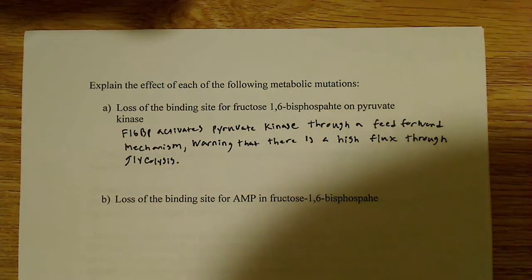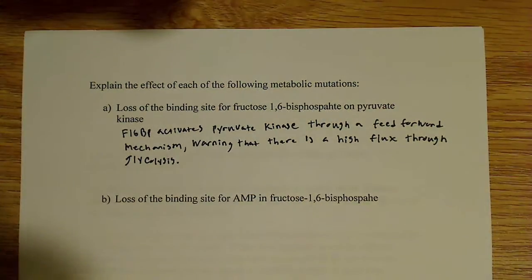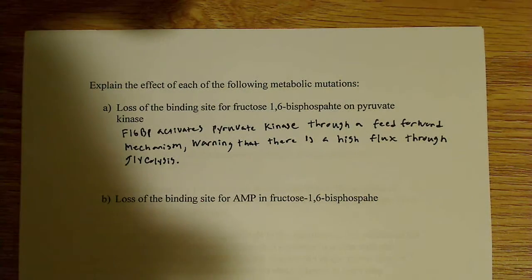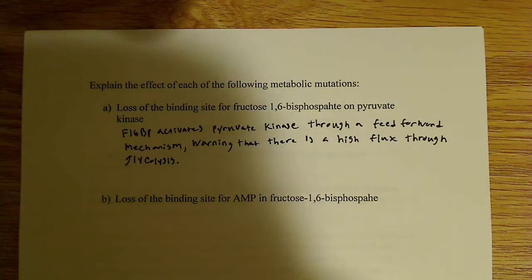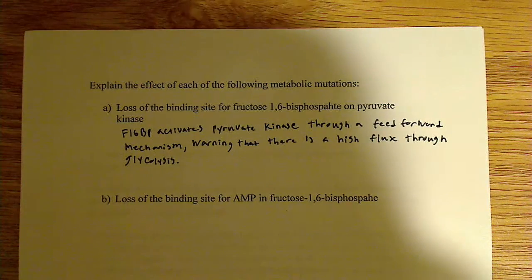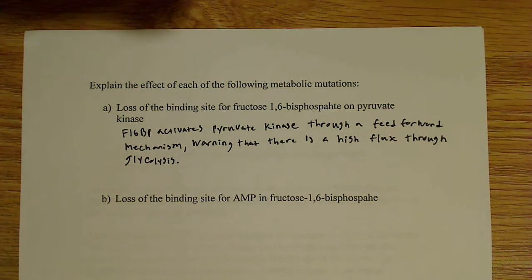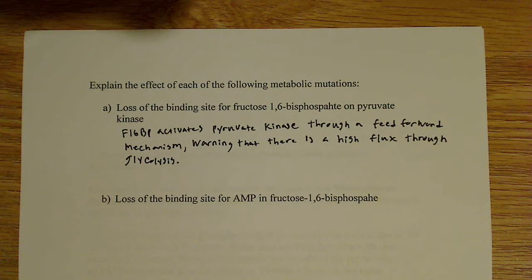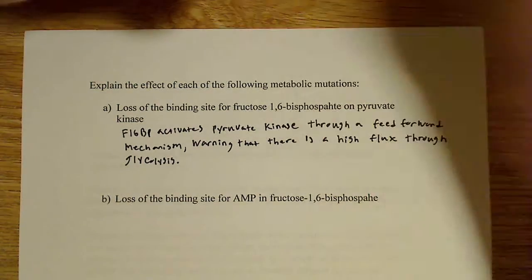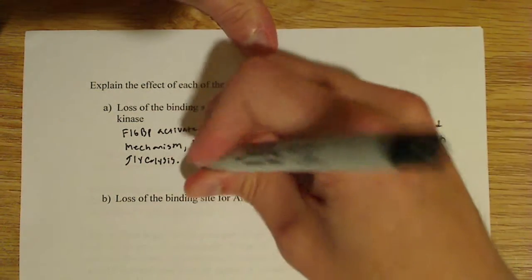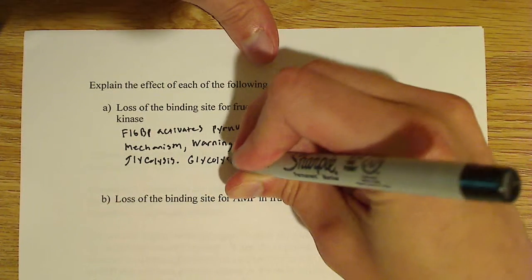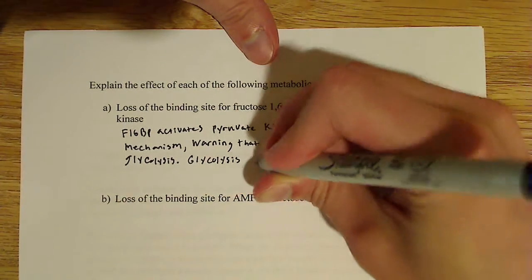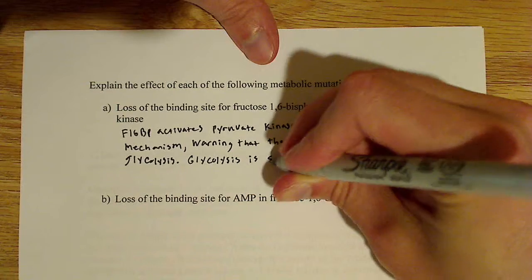So if there's a mutation here, it's going to prevent this activation from occurring. And if it prevents it from occurring, glycolysis is going to slow down. So for my final answer, glycolysis is slowed.